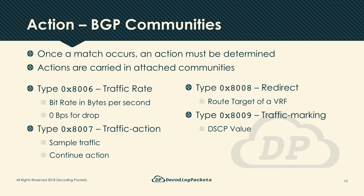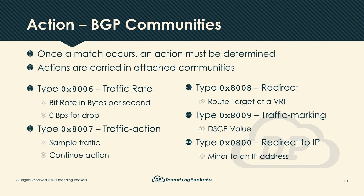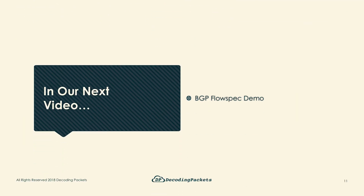Type 0x8009 can remark the DSCP value of matching packets. Type 0x8800 — defined not in the original RFC but in a separate draft — carries an IP address where packets can be mirrored for additional processing, similar to SPAN ports. As of the recording of this video, support for this community is also not complete across all platforms.